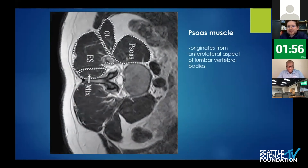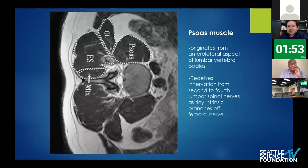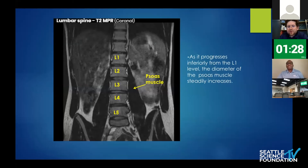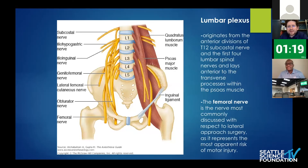The psoas muscle is important when discussing lateral approaches. It originates from the anterior lumbar vertebral bodies and receives innervation through the lumbar spinal nerves as tiny intrinsics off the femoral nerve. It's important to understand that the psoas increases in size and diameter as you move down, and the lumbar plexus intertwines with it throughout — these anatomical relationships guide your access corridors for the XLIF procedure.